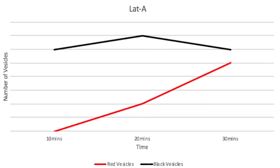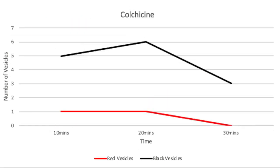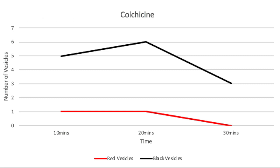The Lat A results do not show any significant decrease in black vesicles over the 30 minutes, but there is still an increase in red vesicles. Looking at the colchicine graph, there is a slight decrease in black vesicles; however, there is no increase in red vesicles.